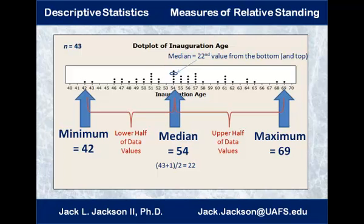Since n is 43, taking 43 plus 1 divided by 2 gives 22. So we count 22 from the bottom to find the median. Following the cursor through the dot plot, the 22nd value from the bottom is identified — and it is also the 22nd value from the top, confirming it is the median.